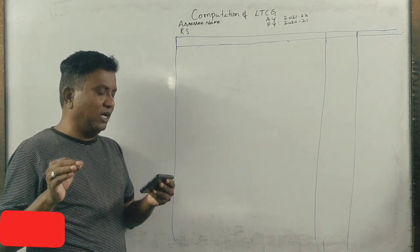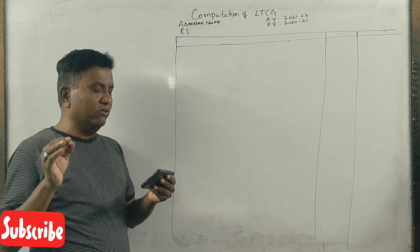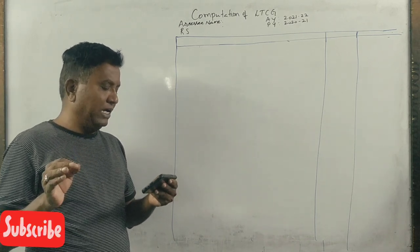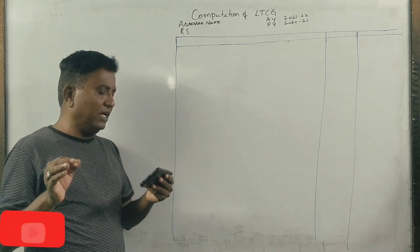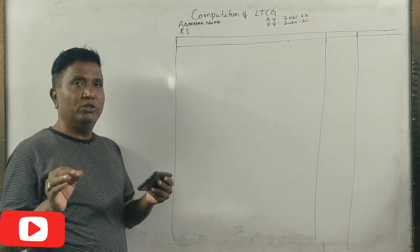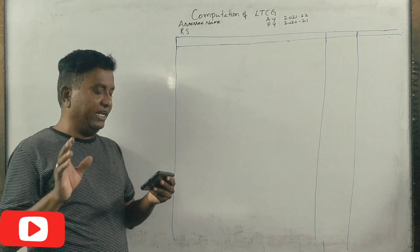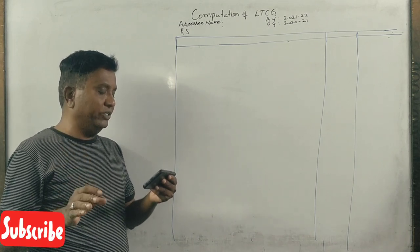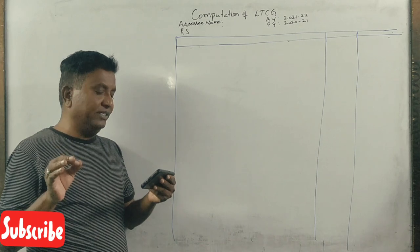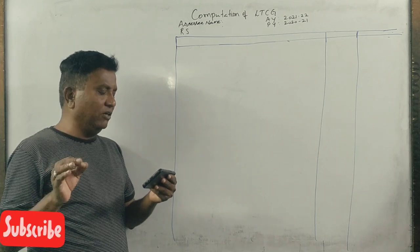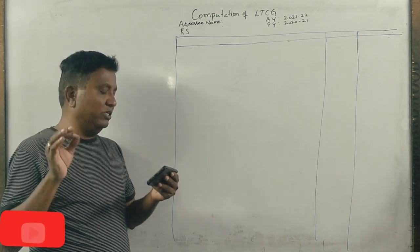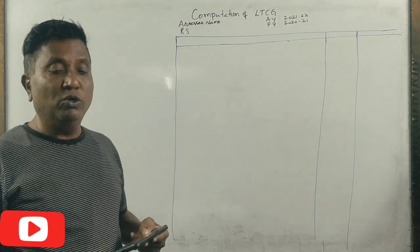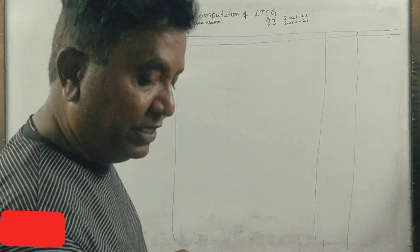The fair market value of the house as on 1-4-2001 was Rs 7,25,000 and he sold this house on 30th of June 2020 for Rs 98,00,000 and paid 2% commission. He purchased a new residential house on 18th of December 2021 for Rs 35,00,000. So this is the question.